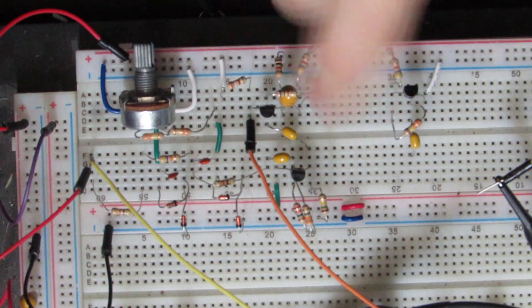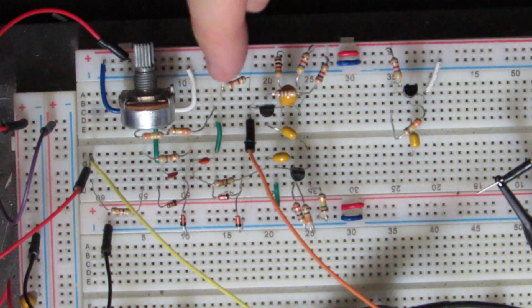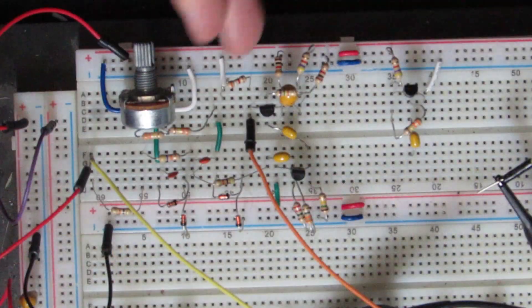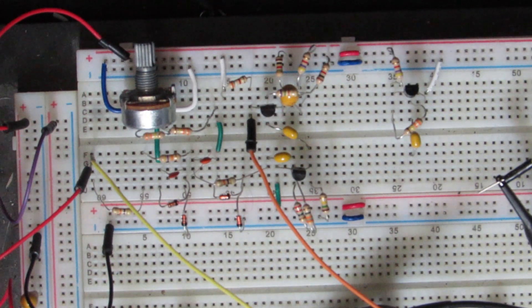Hopefully you remember from last time that the gain of this final stage is set by the ratio of the collector resistor to the emitter resistor. Here we've got a resistor of about 4k and an emitter resistor of about 1k. We've got a gain of roughly minus 4. We need to change this ratio if we want to change the gain of our circuit.